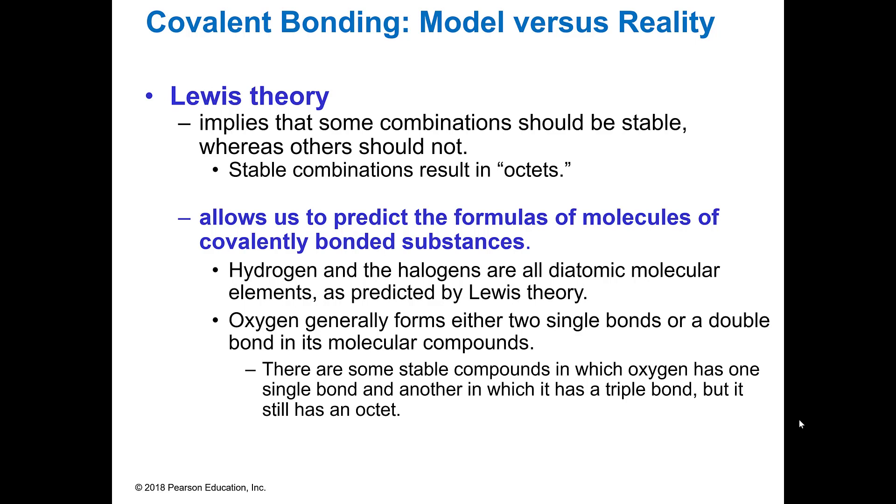Lewis' theory tells us that some combinations should be stable, where others are not. And we know that those stable combinations in most elements are why they form the octet, because they have a full outer shell. And this allows us to predict the formulas of the molecules also in these covalently bonded substances.